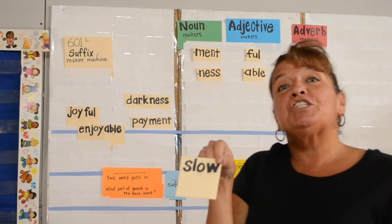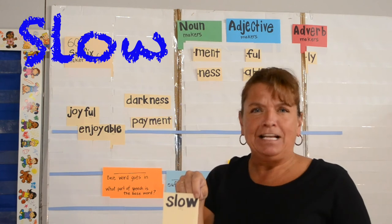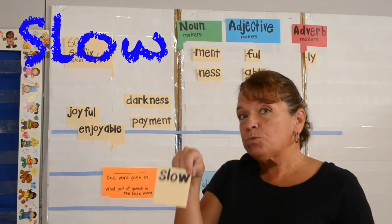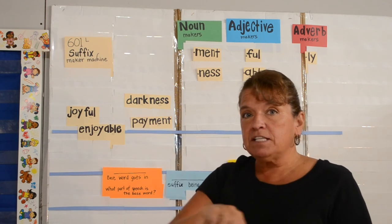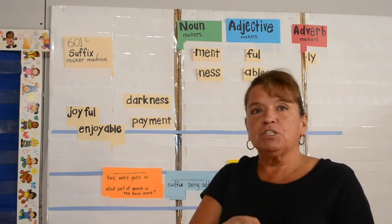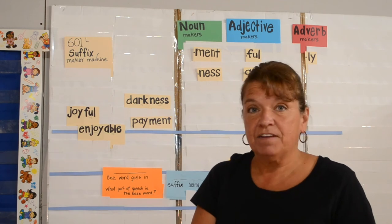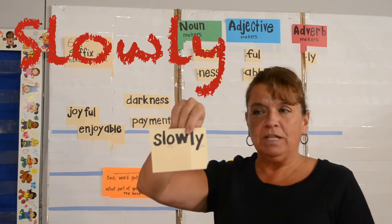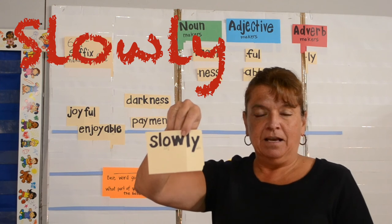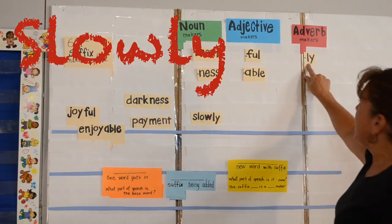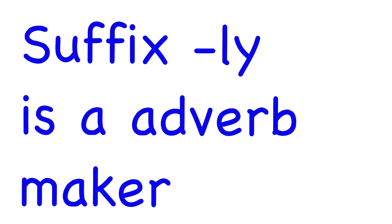The base word is slow. Slow is an adjective. We're going to put that base word slow into the suffix maker machine, and inside we're going to add the suffix L-Y. Out comes the word slowly — this word is now an adverb. So we say that the suffix L-Y is an adverb maker.